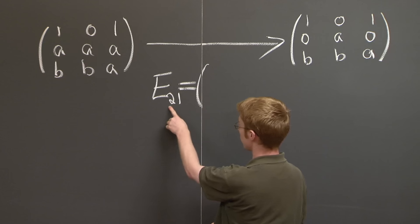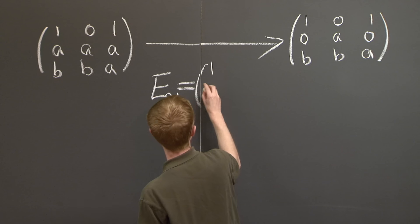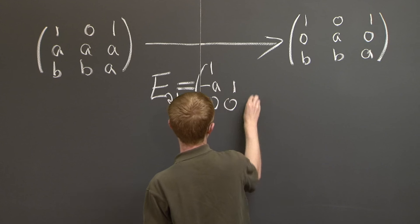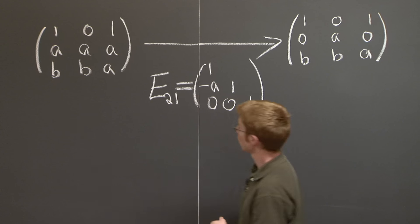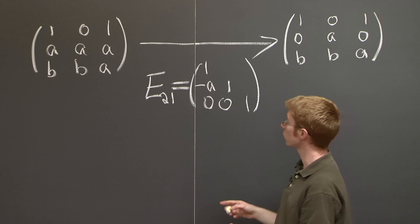Since I eliminated the 2-1 entry, I'll call it E_{2,1}. And it's this matrix. Why is it this matrix? Well,